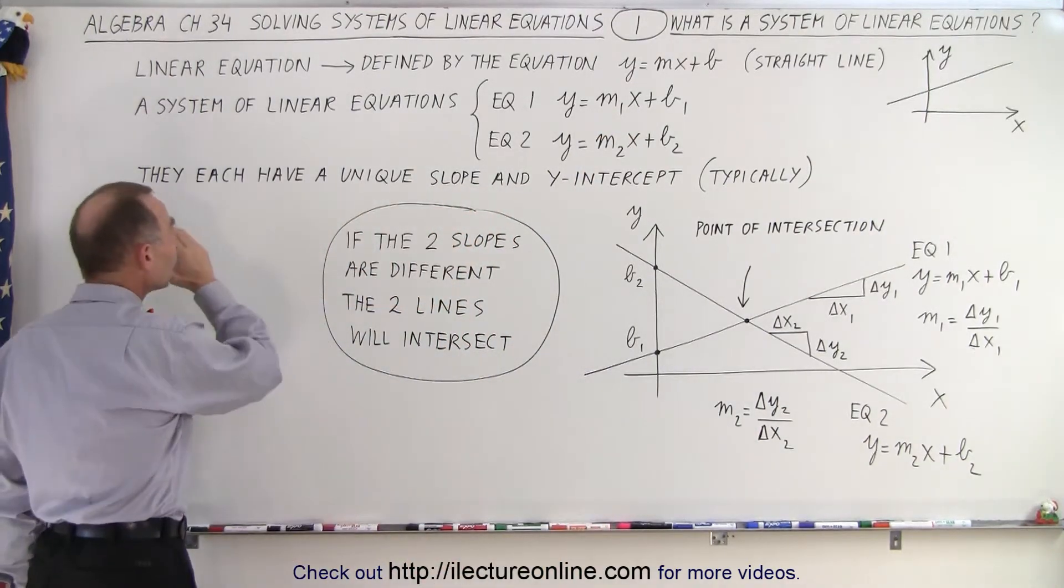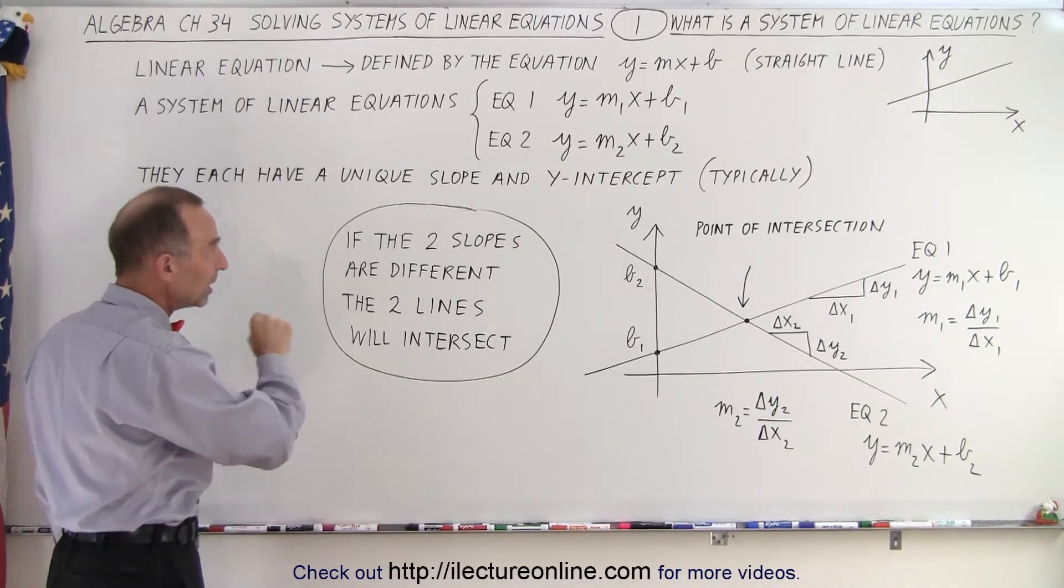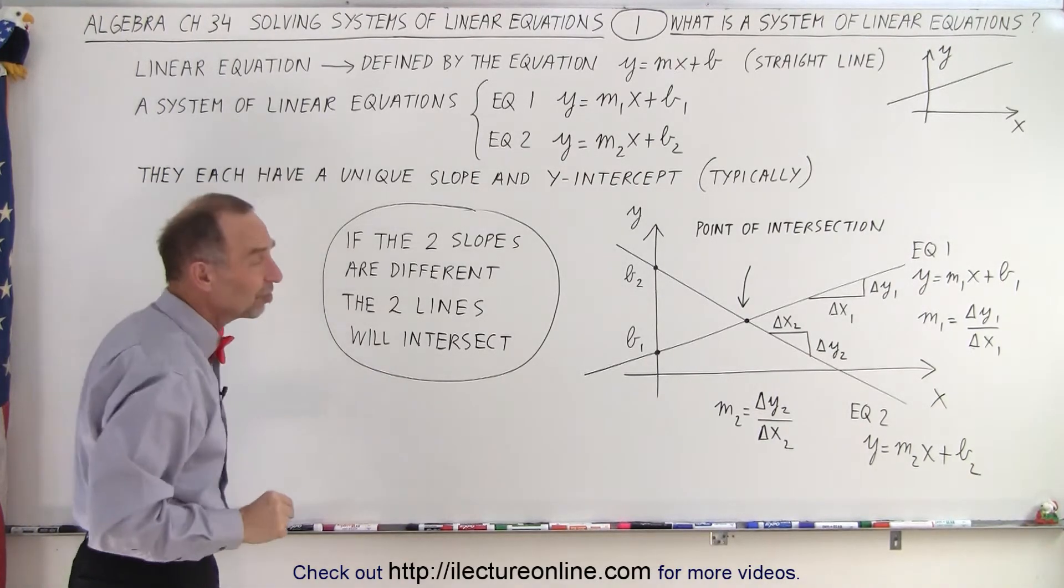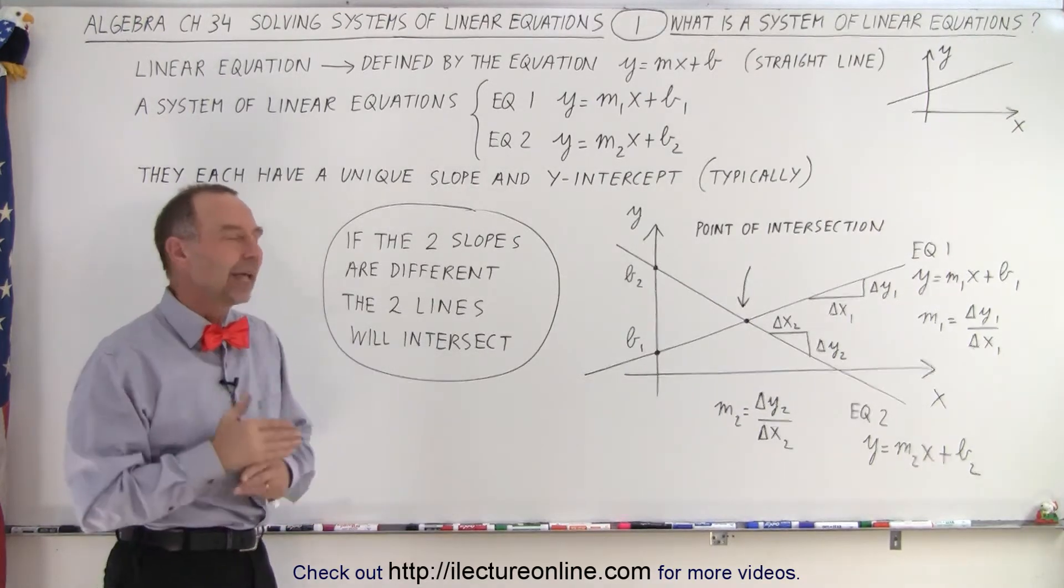So typically, each of the equations in the system has a different slope, a unique slope, and a unique y-intercept. That's typical. It doesn't have to be that way, but typically that is the case.